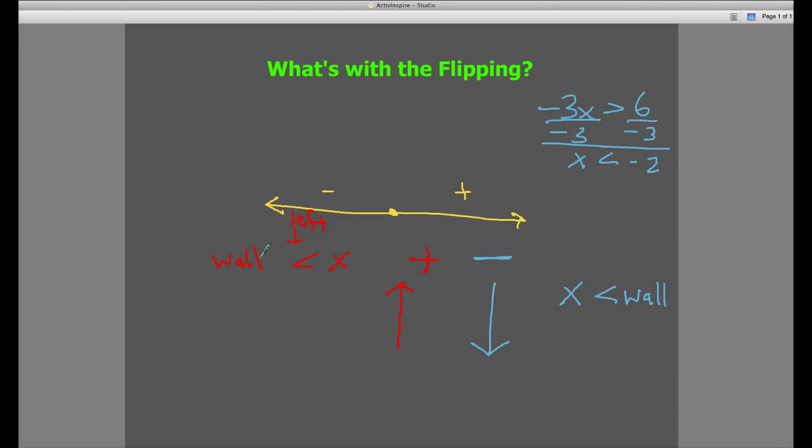So, this is just a really cheap example of why you'd flip that inequality over when you divide by a negative in any inequality.